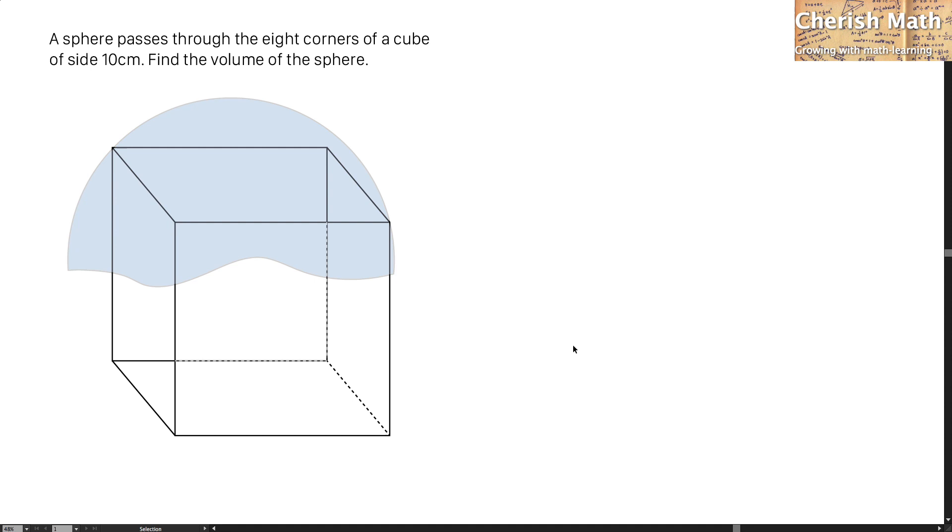The diagram for this question is not provided, and I draw here purposely to facilitate the understanding of the audience. This is a cube and a blue partial sphere that I draw, where this sphere is fit into the cube until it passes through the eight corners.